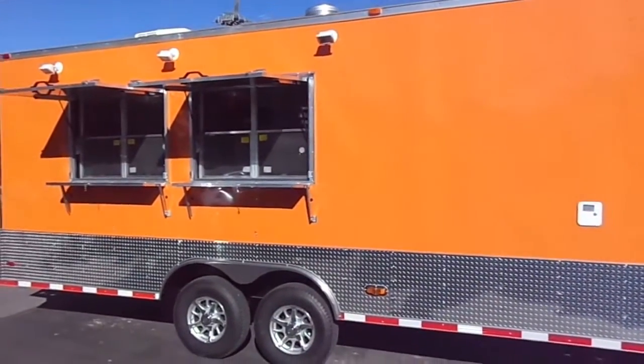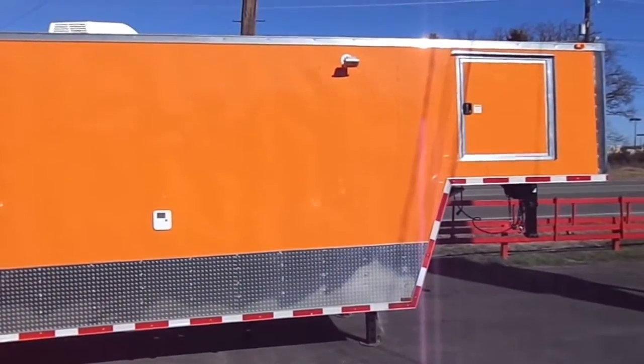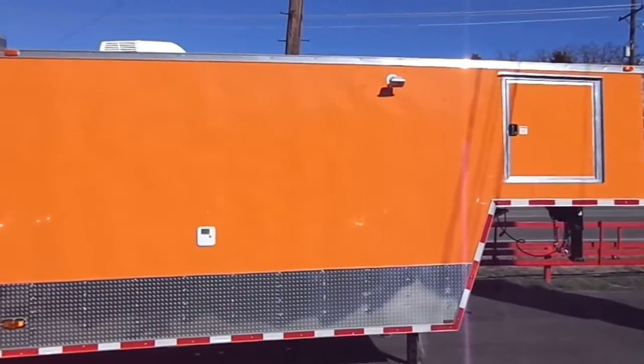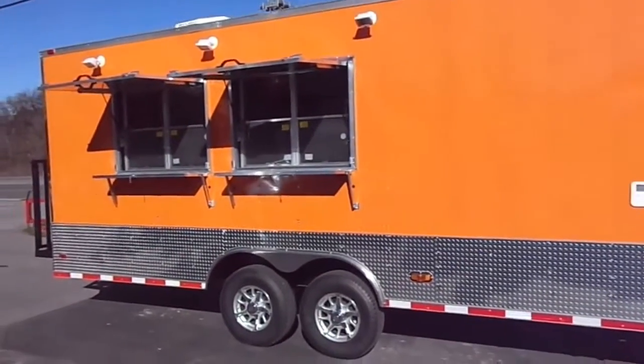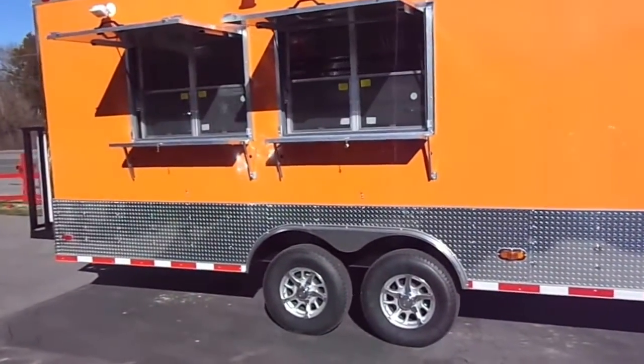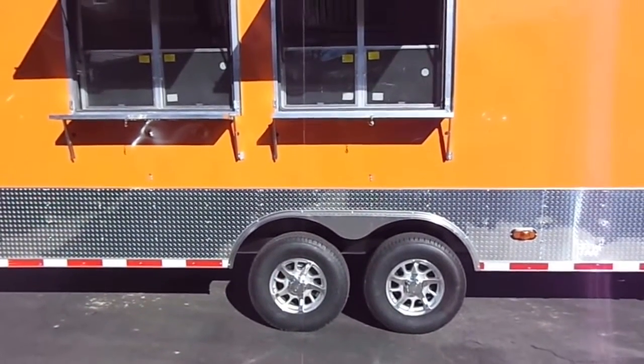Here we have an eight-and-a-half by 34-foot gooseneck concession trailer. It has an eight-foot riser. This trailer has two seven-thousand-pound drop axles on it with mag wheels and radial tires.